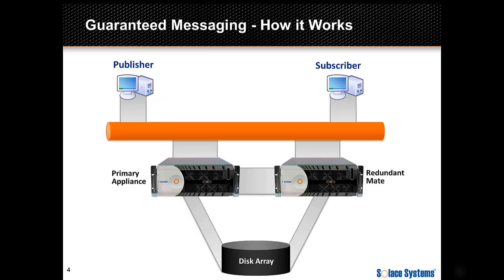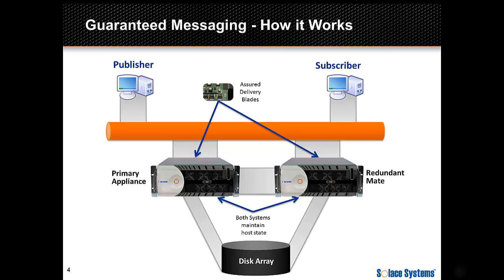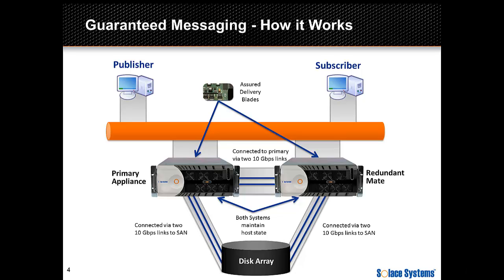The Solace high availability feature provides full appliance redundancy within the data center, eliminating all potential single points of failure. The system is made up of two Solace appliances working together in active hot standby configuration. To support guaranteed messaging, each Solace appliance has an Assured Delivery Blade, or ADB, which implements a non-volatile store using a combination of FPGAs, on-card DRAM, and proprietary hardware. The ADBs of each appliance have a redundant direct connection to their mate ADB via two 10-gigabit fiber links. These appliances also have shared access to an external disk array for storing messages for slow or offline consumers, with connectivity to the SAN through a dual-ported HBA card installed in each appliance providing redundant paths.